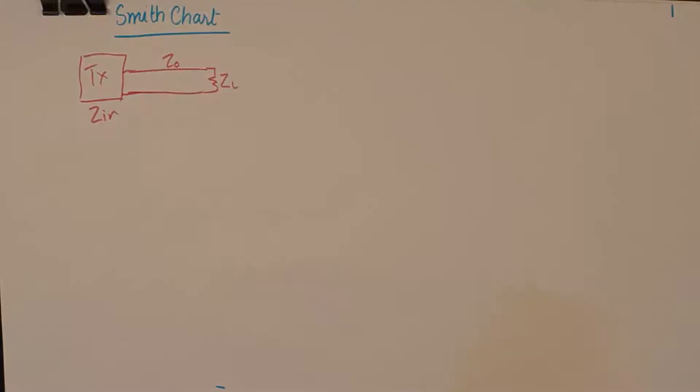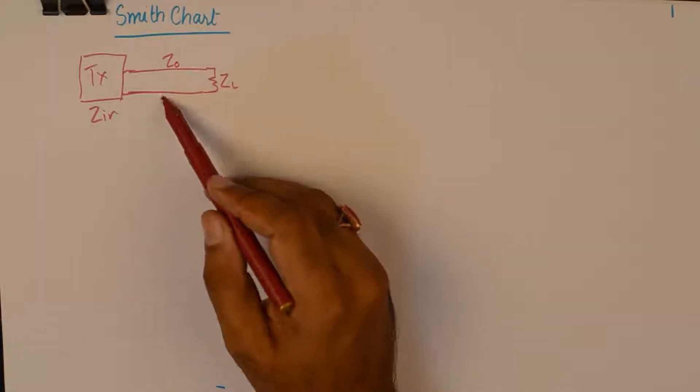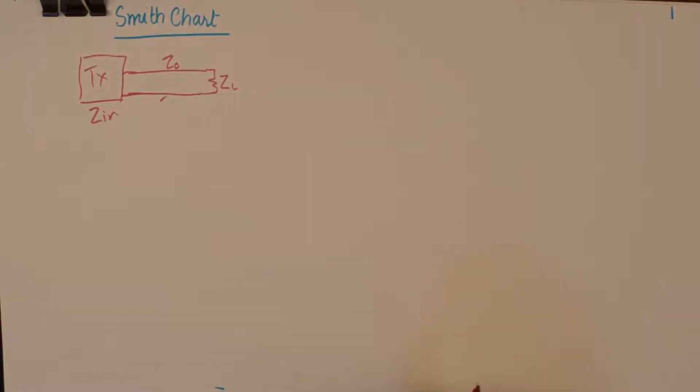A typical transmission system is shown like this where a generator or the transmitter will have input impedance Zin. Then we have the characteristic impedance of the medium, Z0. This is the medium. And finally, the signal is transferred to the load, which has an impedance of ZL, the load impedance.